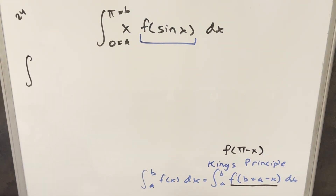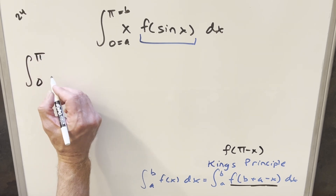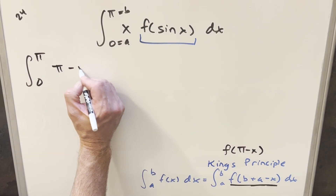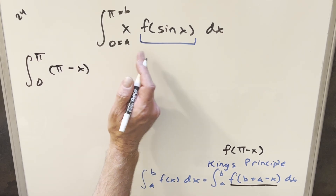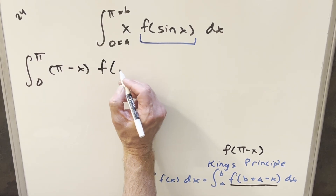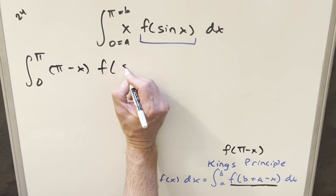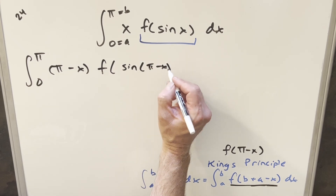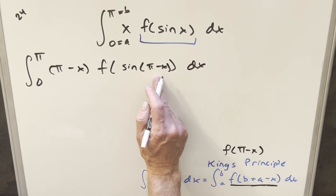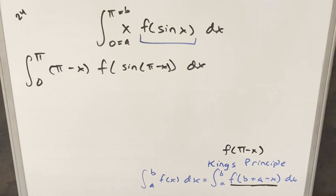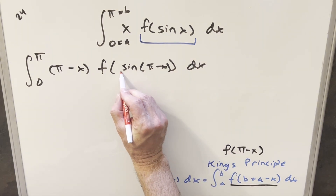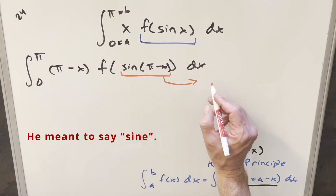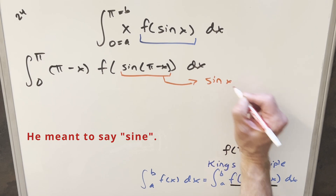Let's update everything. The bounds stay the same, going from 0 to pi. Then for x, we plug in pi minus x, so this becomes pi minus x. For f, we've got no idea what this function is, but it shouldn't matter — otherwise we couldn't do the problem. The nice thing is this is just the supplementary angle formula for cosine, so sine of pi minus x is the same thing as sine of x.